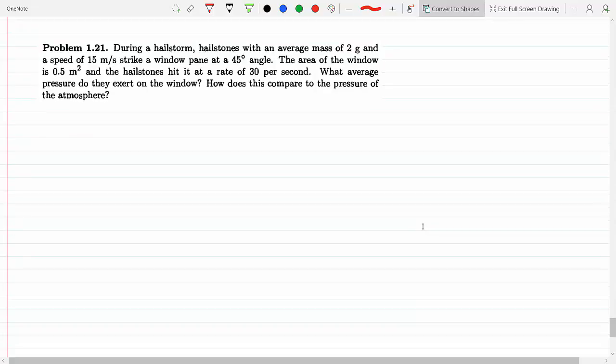During a hailstorm, hailstones with an average mass of 2 grams and a speed of 15 meters per second strike a window at a 45-degree angle. The area of the window is 0.5 meters squared, the hailstones hit it at a rate of 30 per second. What average pressure do they exert on the window?